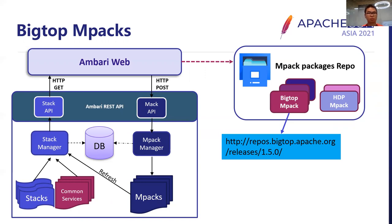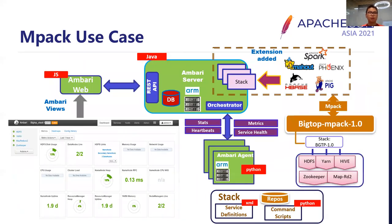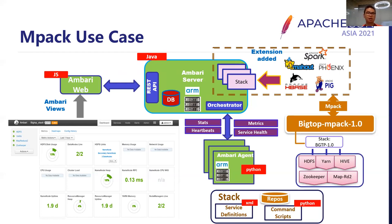We adopt the Bigtop new release as the stack's new repo. This is the use case of our Bigtop mPack to deploy the big data software stack via Ambari. Ambari can manage complex and large distributed Hadoop systems by simply accessing the web UI with a click of a button, and users can easily access the UI to deploy Hadoop-related projects. Ambari interacts with the Ambari server via REST API, and the Ambari server orchestrates services on Ambari agents. These services come from the software stack which defines the Bigtop mPack.